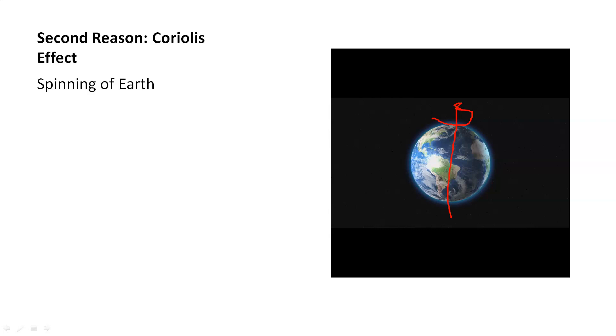So basically, Coriolis effect tells us that in the northern hemisphere, all the heavy objects like air, clouds, they will be directed towards the right hand side direction.